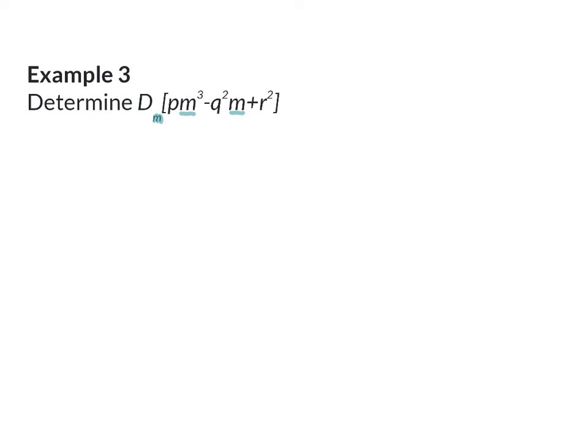So when differentiating here, we can immediately start off by using our rules, because we already have three separate simplified terms. So for our first term, the exponent of m is 3, and that will be multiplied with the constant p in front, so that will give us 3 times p, and for the exponent of m, we subtract 1 and end with 2.